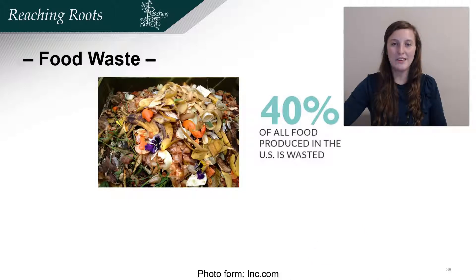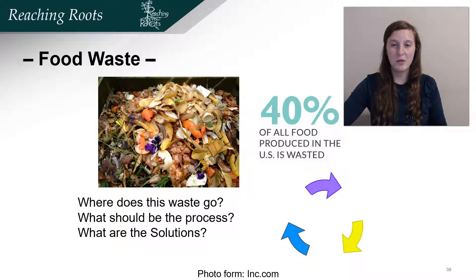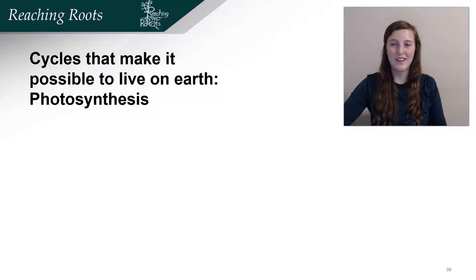Let's talk about food waste. Forty percent of all food produced in the United States is wasted. This is a huge problem, but nature has a cyclical process solution where the food is composted and returned to the soil to help grow more food. We'll talk more about this in a later lecture. Where should this wasted food go? What should be the process and what are the solutions for the current problem? When faced with a problem, always try to think of a solution. Cyclical processes are incredibly important.